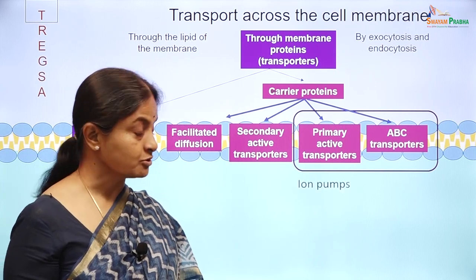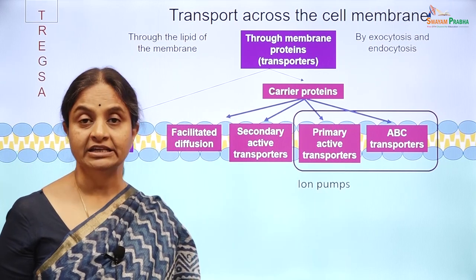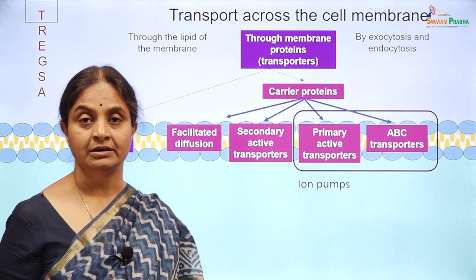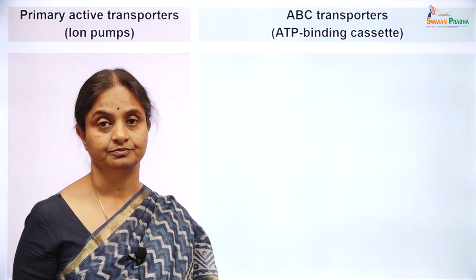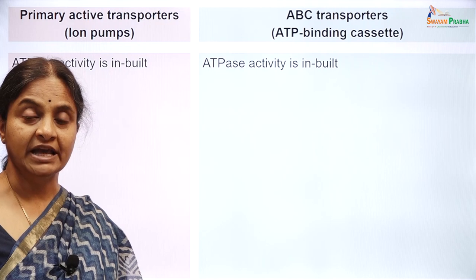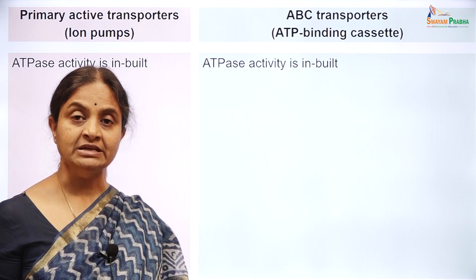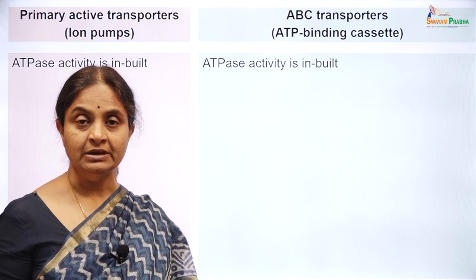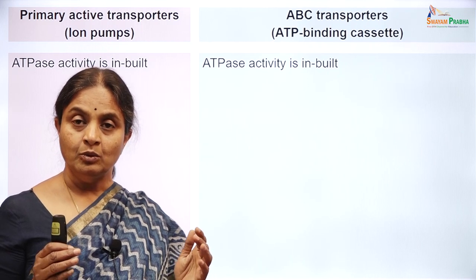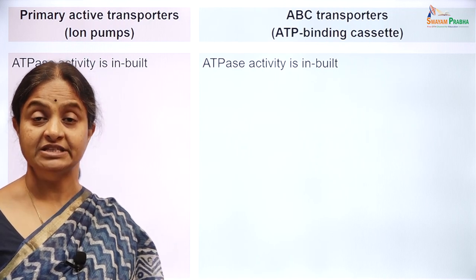The primary active transporters are also referred to as ion pumps. If both of these are ATP-dependent transporters, why do we have to classify them separately? Both of them are ATPase enzymes themselves. The transporter itself is an ATPase enzyme, able to cleave ATP and use the energy to do certain things which result in transport of substances across the cell membrane.